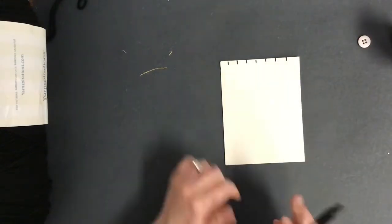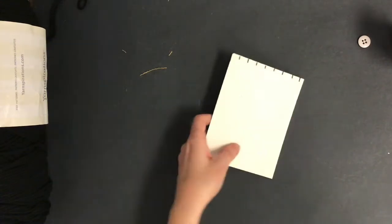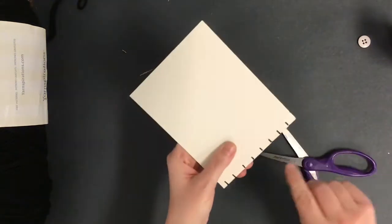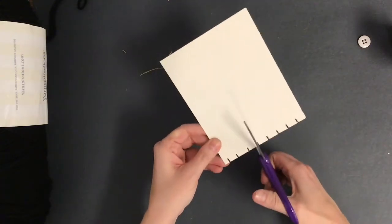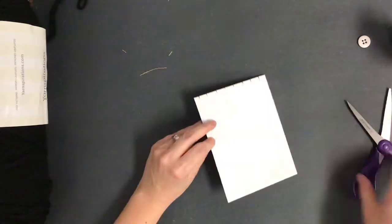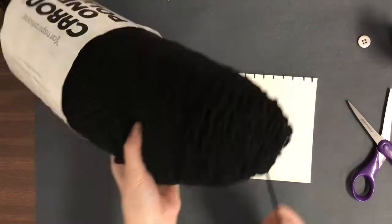I've got seven on there. I'm going to add one more. Step number two: cut your lines about one half inch deep. If you don't cut them deep enough into the cardboard, you can have problems with your yarn poking out. Make sure you're cutting them deep. Step number three: wrap your loom.